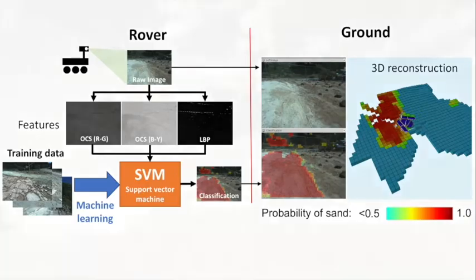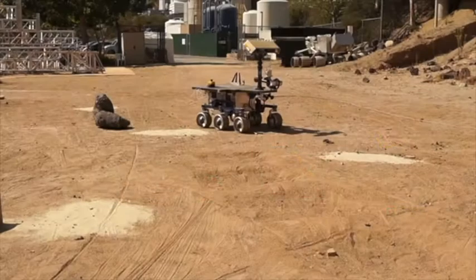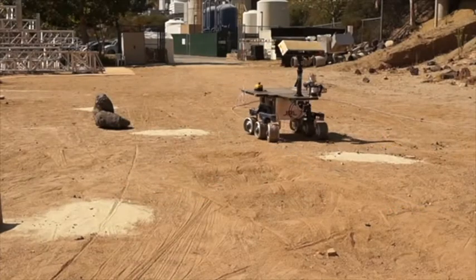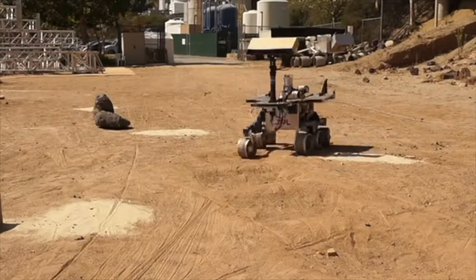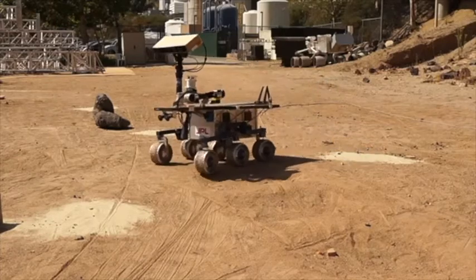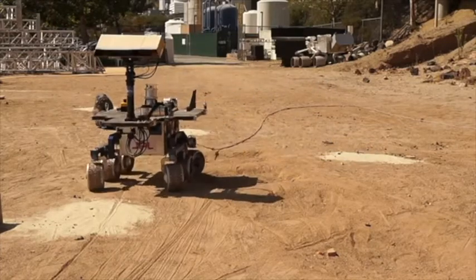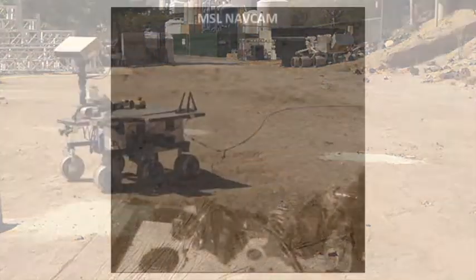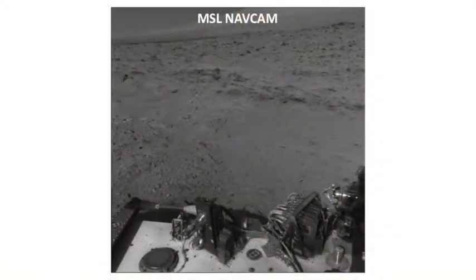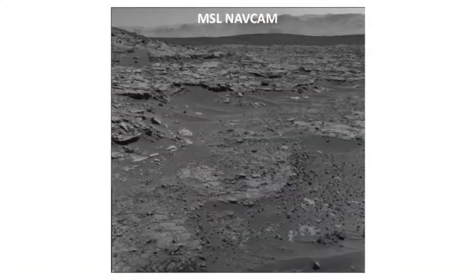Spock Light was tested in two ways. First, it is deployed on the Athena test rover and tested in the Mars yard. Second, it is tested on the nav cam images from Curiosity.